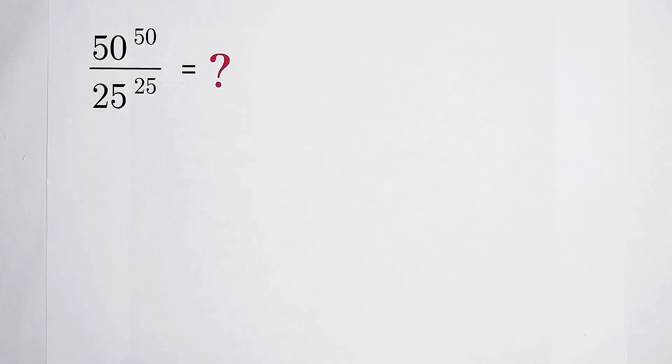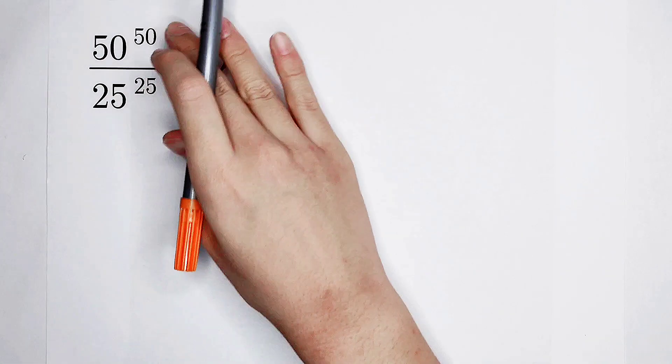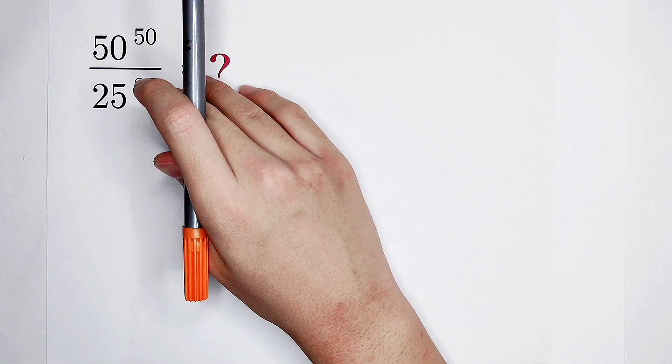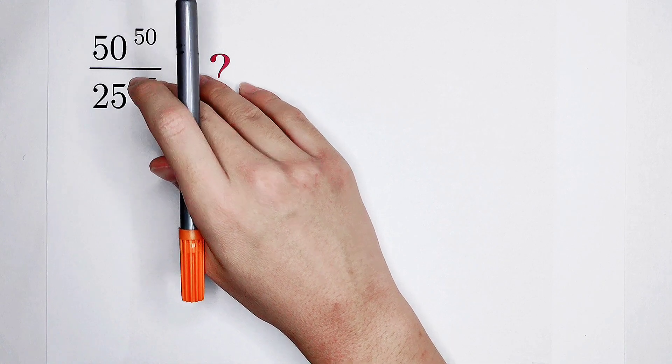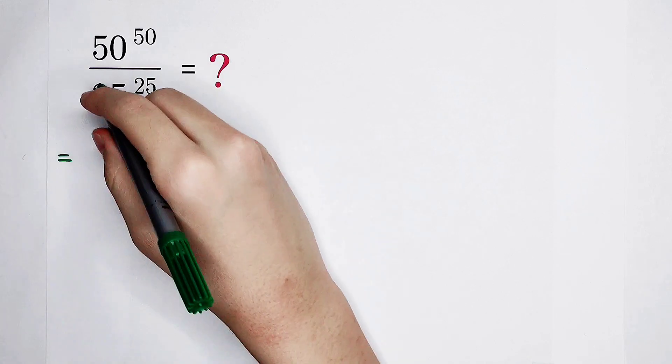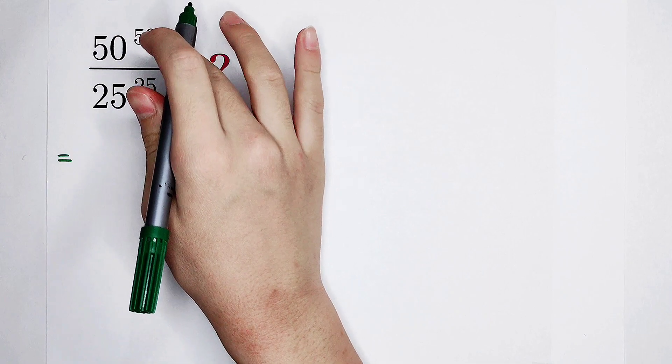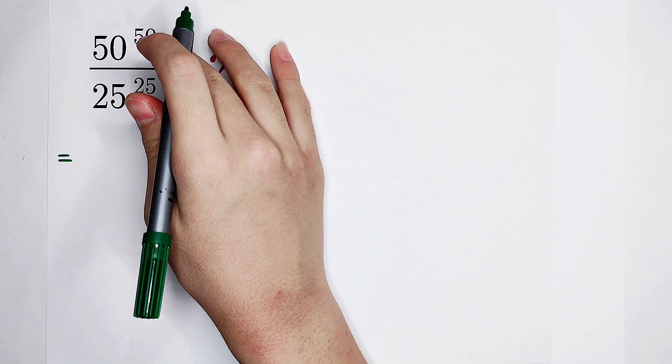I'm going to try letting these two exponents have the same value. Since 50 is 2 times 25, it can also be written as 25 then plus 25. So, let's write it. The numerator, 50 to the power 50. Let's regard this exponent, 50, as 25 then plus 25.